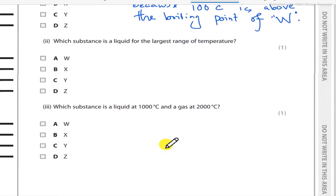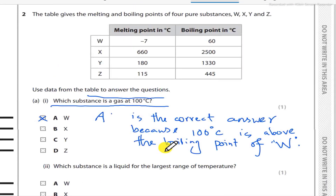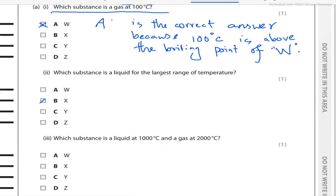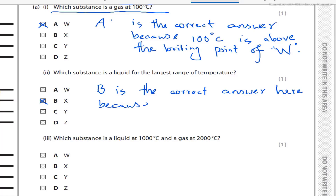Question number 2: which substance is liquid for the largest range of temperature? The answer is substance X, option B, because substance X has the largest difference between its melting point and boiling point — a range of 1840 degrees Celsius. So B is the correct answer.